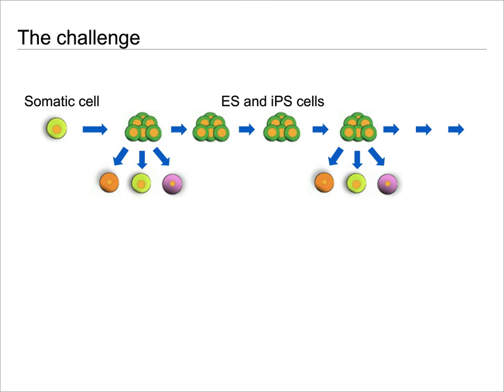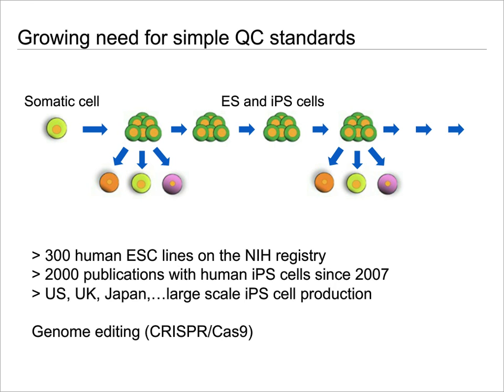To further illustrate this, there are currently about 300 human embryonic stem cell lines on the NIH registry, thousands of publications using iPS cell lines, and many large-scale projects going on to produce iPS cells. In particular, now with advanced genome editing technology such as the CRISPR-Cas9 systems, we can use many existing cell lines and introduce many different mutations and genomic changes, which again raises the question of what the phenotypic consequences are on the cells.